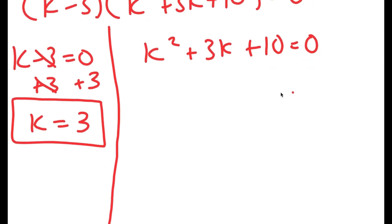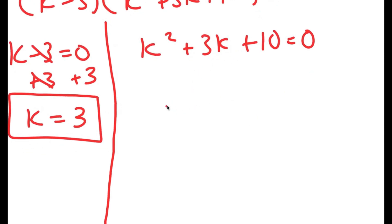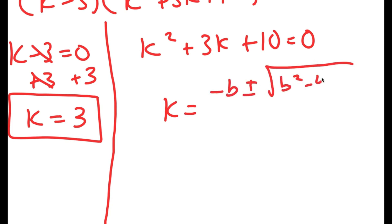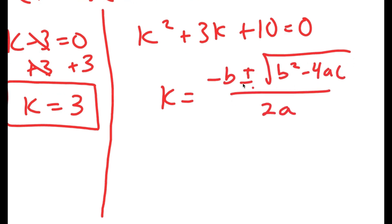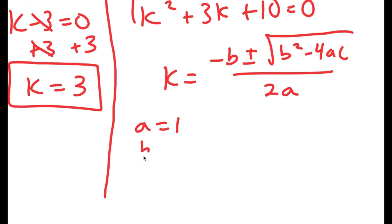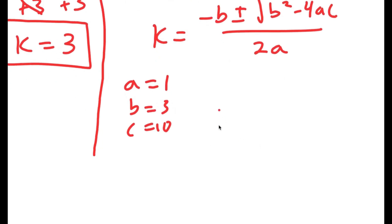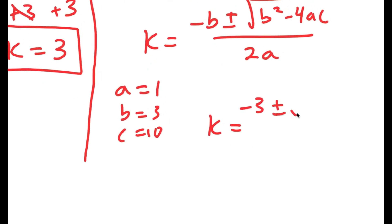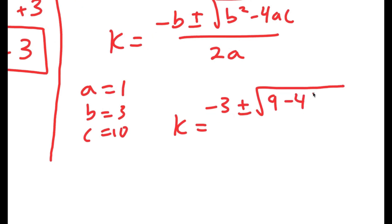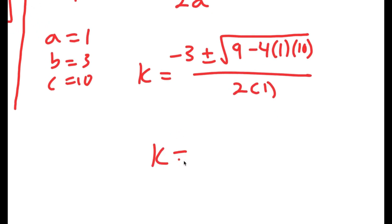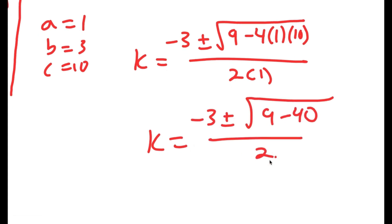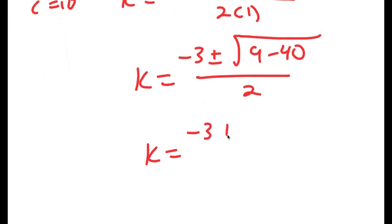For k squared plus 3k plus 10 equals 0, because this is a quadratic equation, I can use the quadratic formula, which is negative b plus or minus the square root of b squared minus 4ac, all over 2a. In this case, a is 1, b is 3, and c is 10. So I get k equals negative 3 plus or minus the square root of 9 minus 4 times 1 times 10, all over 2 times 1, which is equal to negative 3 plus or minus the square root of negative 31 over 2.